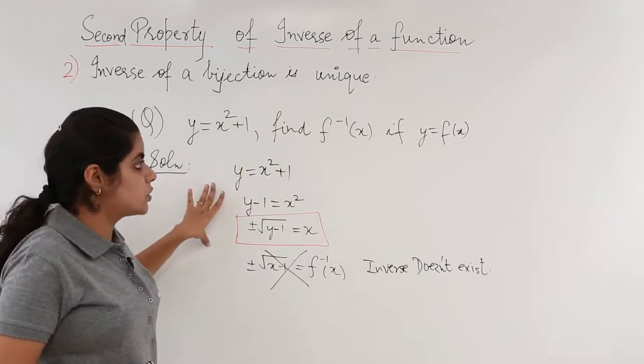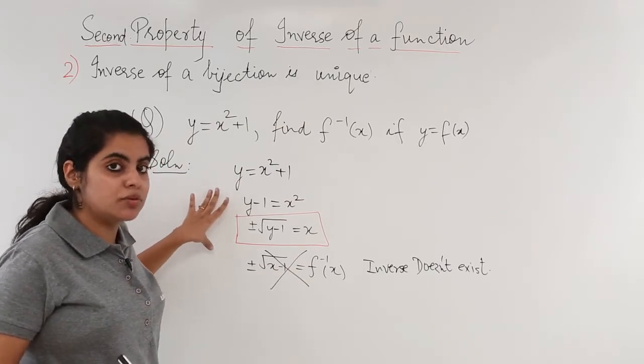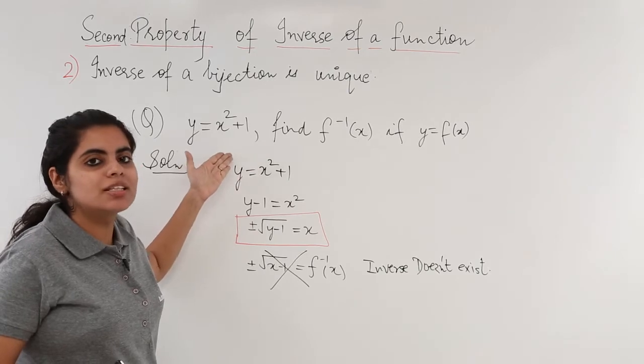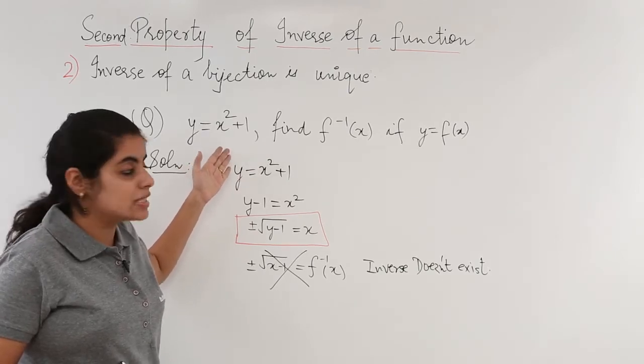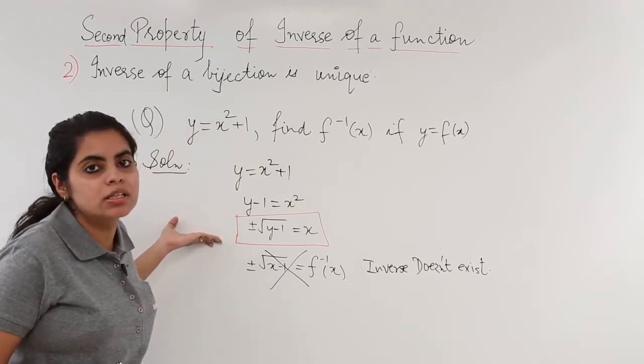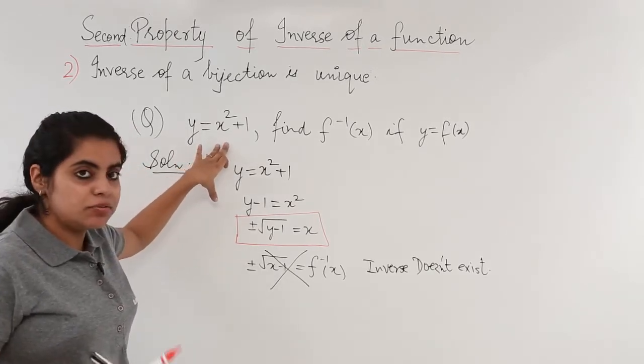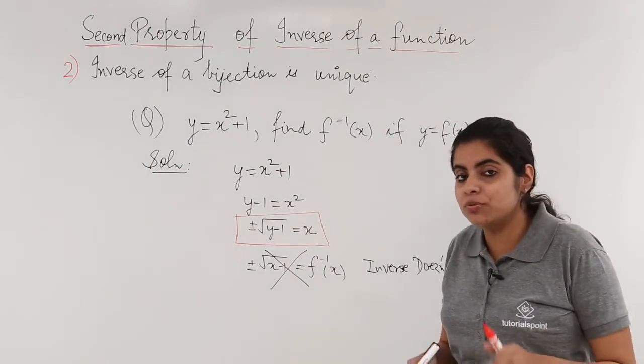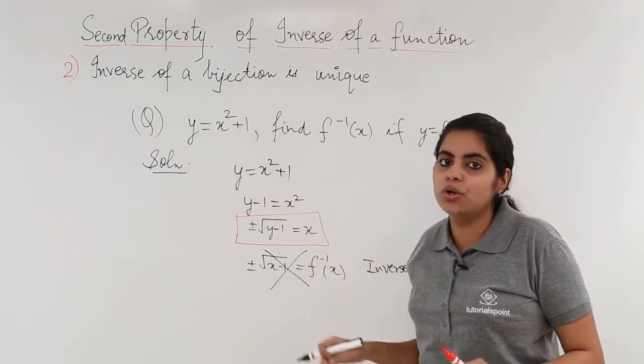But in this question, you were given a function which was x square plus 1. And if you check, this is not one-one onto, this is itself not a bijection. So you did not get a unique inverse. I would be explaining it further. Let's check what was the problem in the question. The problem in the question was simple that it was not one-one onto.